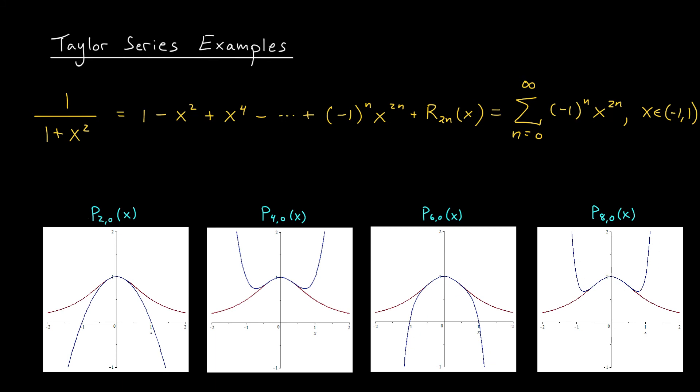They do an excellent job of approximating the values of my function between -1 and 1. But just like in the last example, for x values less than -1 or bigger than 1, the approximations actually get worse as we increase the degree. So just like before, this function has a Taylor series, it's given by something like this, but that Taylor series only matches the value of the function for x between -1 and 1.